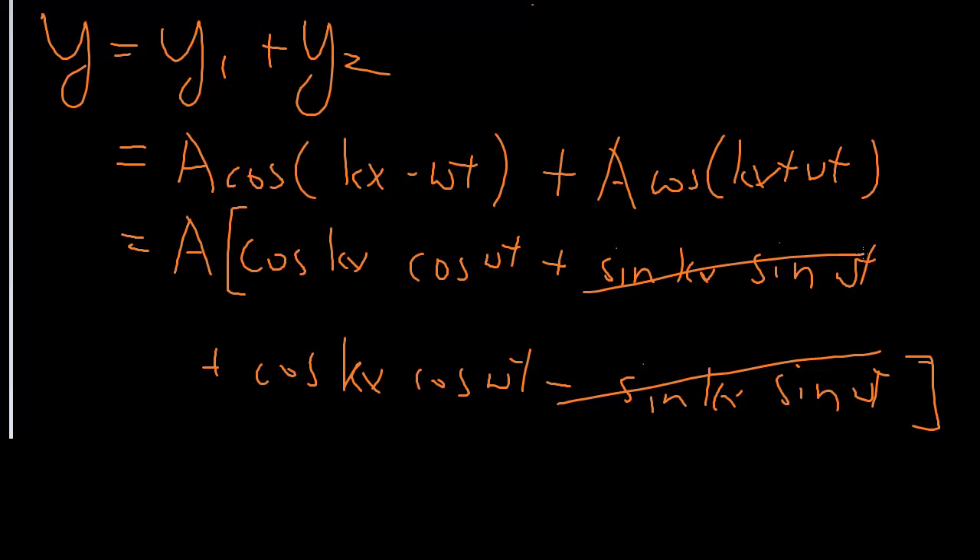This last term cancels out, and we have simply left with 2A cos(kx) cos(ωt). Notice how we no longer have the kx minus ωt combined phase, so that's why the wave is not travelling.